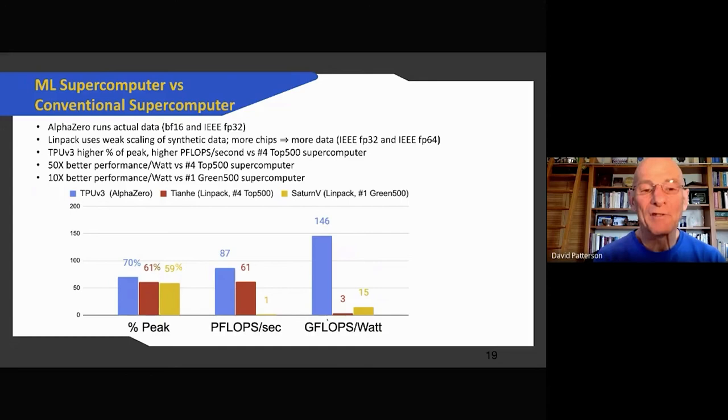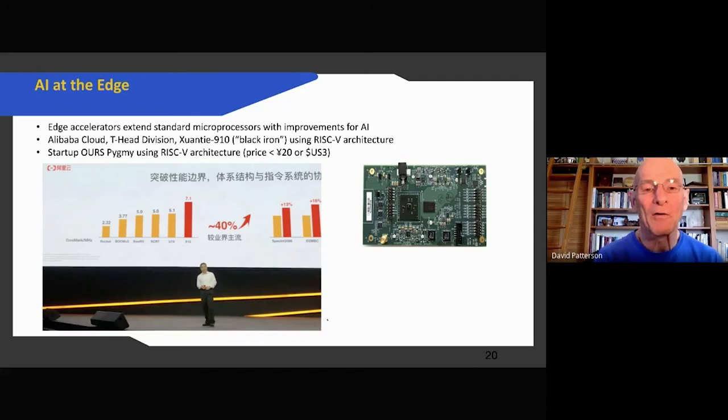And so the results are at the bottom. Remarkably, running a production application, AlphaZero gets 70 percent of peak. That's 70% of 1024 chips times the peak performance per chip, which is amazing. But you can see for LINPACK, the two supercomputers we have here get about 60 percent. In terms of the actual petaflops per second, it's almost 90 for TPU v3 versus 60 for one. The reason this slower computer there in yellow is there is because there's another way you can look at the LINPACK results. It's called the Green 500, which plots the Top 500 by FLOPS per watt. And the Green 500 winner is the Saturnv at 15 gigaflops per watt, but TPU v3 is 10 times better performance per watt than the number one Green supercomputer, which is pretty remarkable.